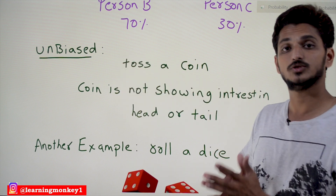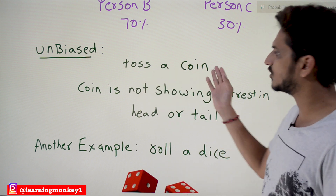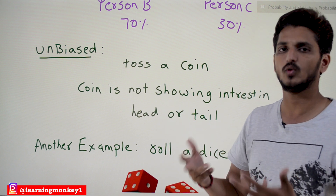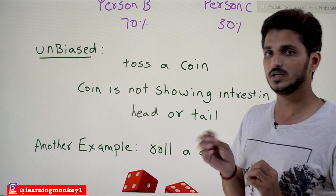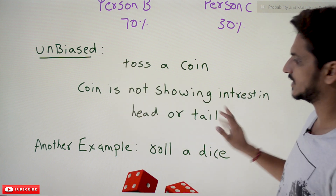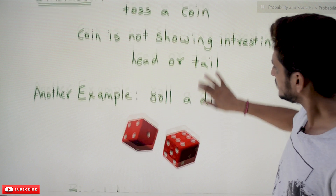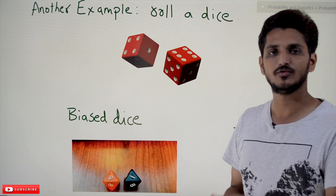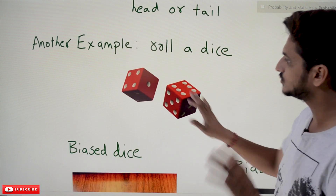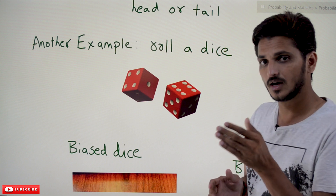Unbiased means giving equal priority to all outcomes — no preference toward any particular one. When you toss a coin, the coin is not showing any interest for head or tail; it may show up head or it may show up tail. We don't know the outcome, and it is not giving more importance to either side. Similarly, if you roll a dice, it may show up one, two, three, four, five, or six — any value — each having equal chance. That is what unbiased means.